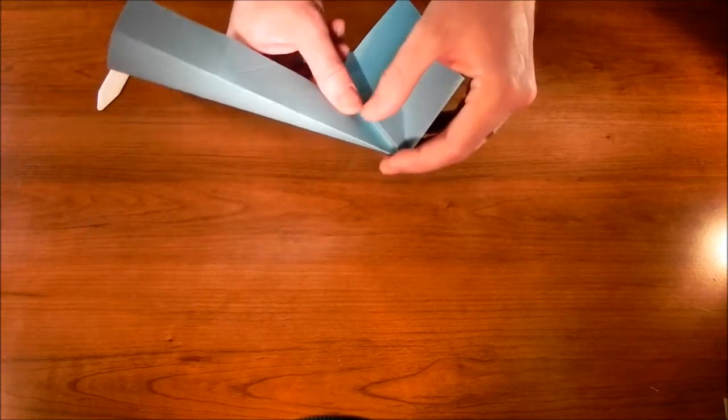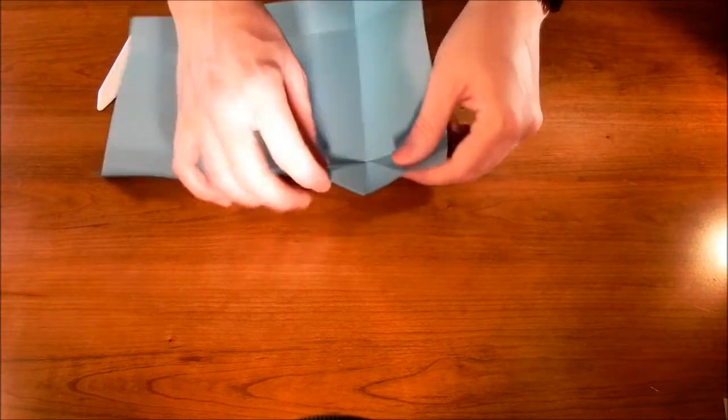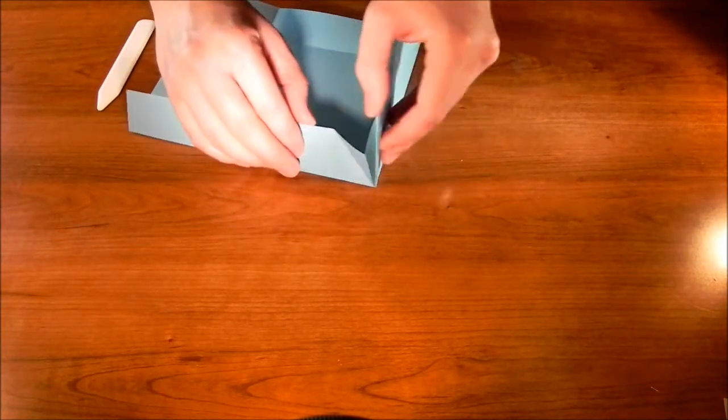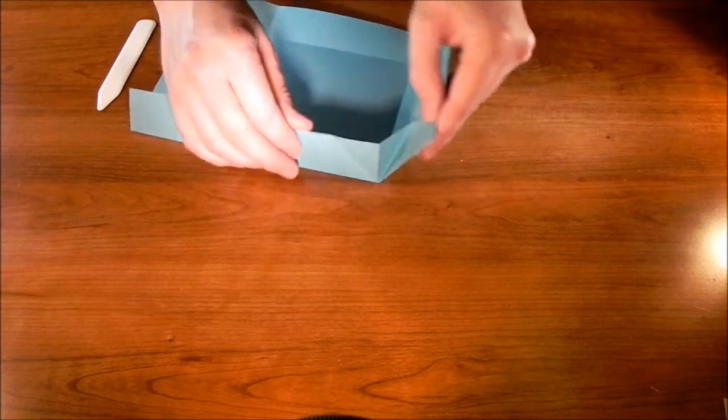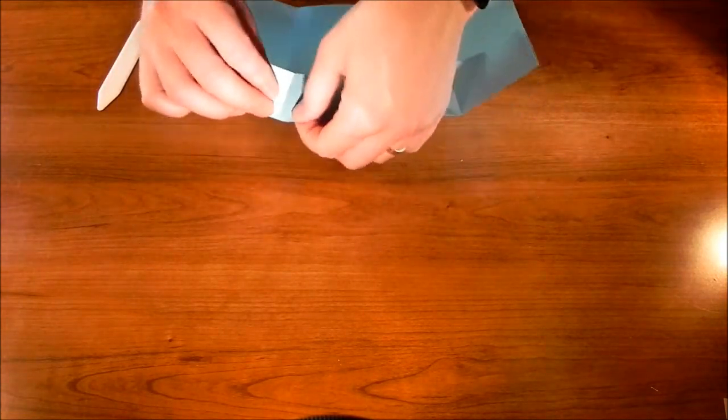So do it on the other side here. And you'll see it makes this little point, this little pocket. And you should see now how that's going to fold up to make our box. So we just need to do that on the other three sides.